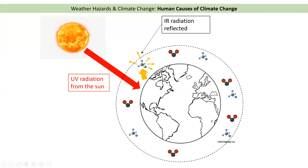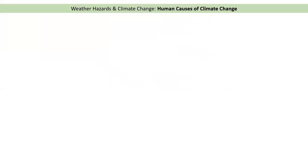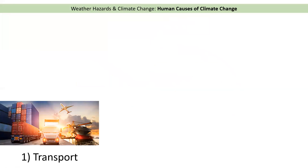Some of those rays go back into space but some go back down to earth and heat it up. If there's more greenhouse gases floating around in the atmosphere — more methane, more carbon dioxide — then more of the Sun's heat will bounce off them and reflect back down to earth, making it much warmer. That's climate change in a nutshell. Today we're looking at the human causes of that climate change and what we are doing to make those impacts much worse.